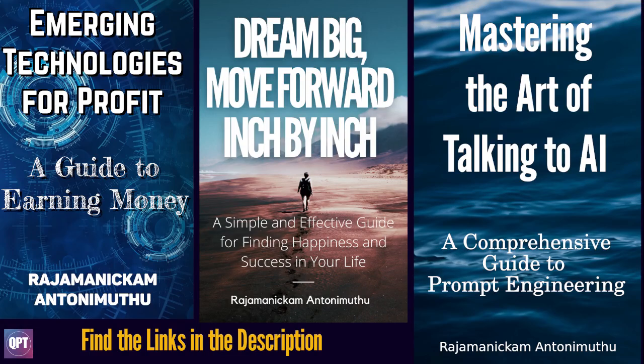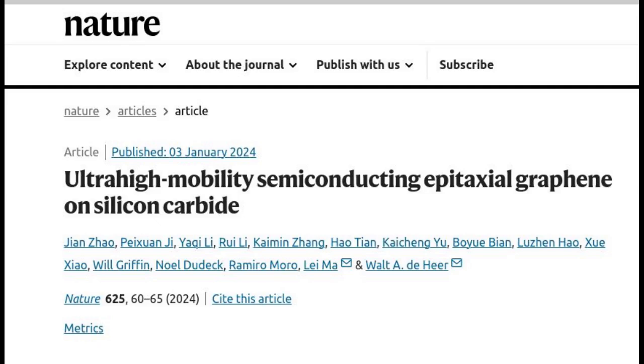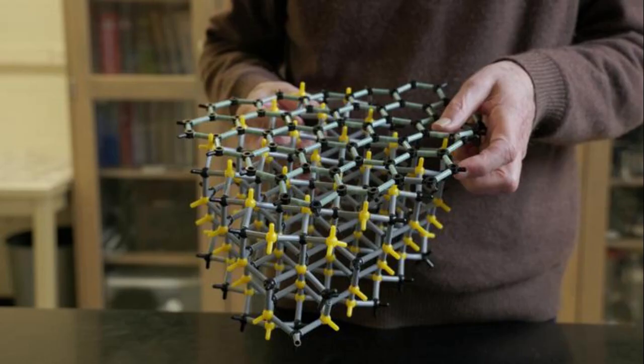Hello everyone, welcome to QPT. Researchers at the Georgia Institute of Technology have created the world's first functional semiconductor made from graphene, a single sheet of carbon atoms held together by the strongest bonds known.